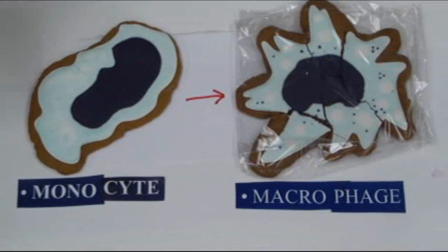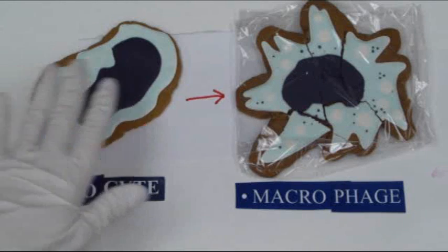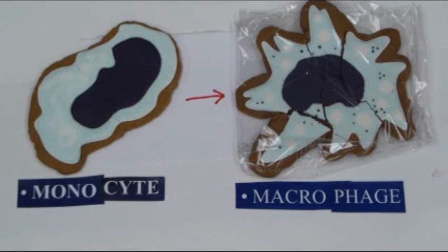Here we are looking at a blood monocyte, and again this has arisen from a stem cell within the bone marrow. It retains its nucleus and patrols through the blood. During normal healthy states, the monocyte can replace any macrophage that is in the tissue outside of the blood vessel, and during times of infection many of these monocytes can be mobilized within about 8 to 12 hours to divide and to differentiate into macrophage.